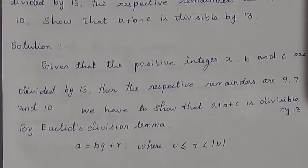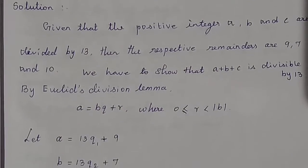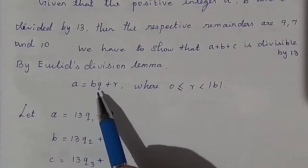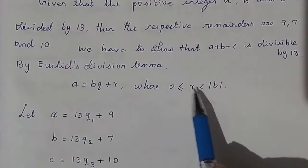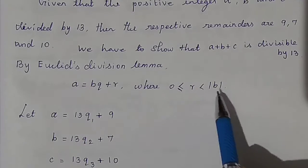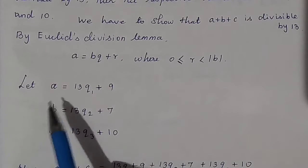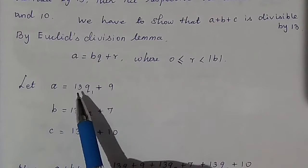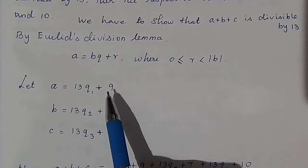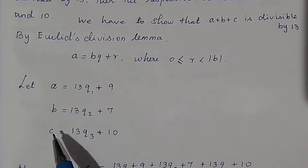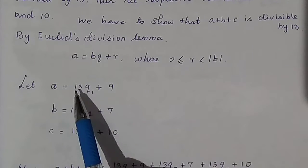By Euclid's division lemma, a equals bq plus r where 0 ≤ r < |b|. Let a equal 13q1 plus 9, b equal 13q2 plus 7, and c equal 13q3 plus 10.